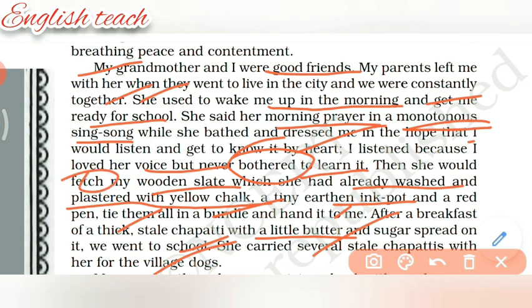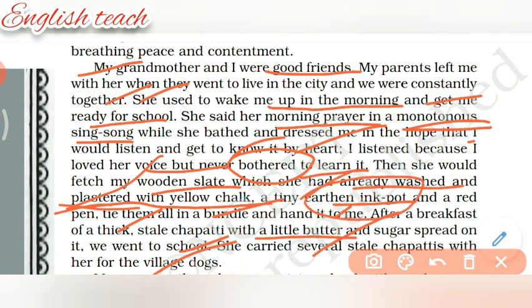'She would fetch my wooden slate which she had already washed and plastered with yellow chalk, and a tiny earthen ink pot and a red pen, and tie them all in a bundle and hand it to me. After a breakfast of thick stale chapati with a little butter and sugar spread on it, we went to school.' Fetch means to go and bring back. Slate means in olden days people used to write on a black slate. Plastered means covered. Earthen ink pot means an ink bottle made of mud.